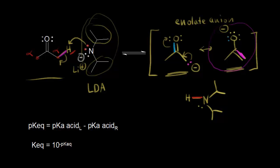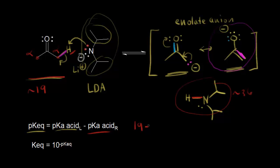This reaction is at equilibrium, so to figure out which direction is favored, one way is to calculate the Keq. We first need to calculate the pKeq, which would be the pKa of the acid on the left — acetone — with a pKa of approximately 19, minus the pKa of the acid on the right, which is our amine, approximately 36. So 19 minus 36 gives us negative 17. To find the Keq, we take 10 to the negative of that number — 10 to the 17th — which is obviously a huge number, much greater than one, so we know the equilibrium lies to the right.